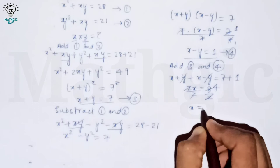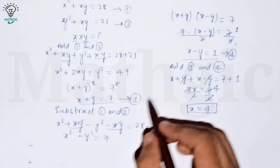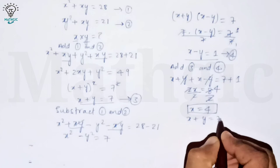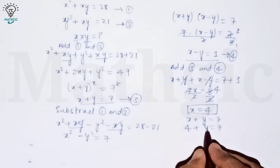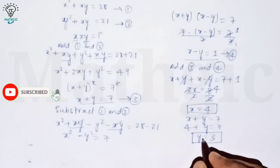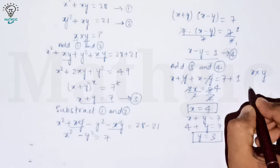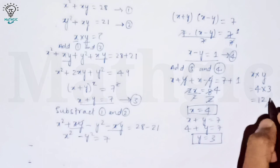To find y, substitute x equals 4 into equation three: 4 plus y equals 7, so y equals 3. Therefore, x times y equals 4 times 3, which equals 12. The value of x times y is 12.